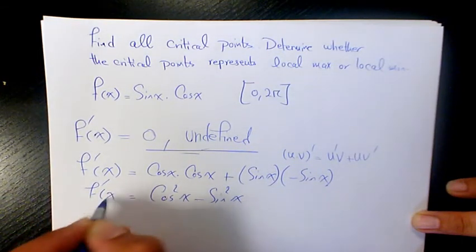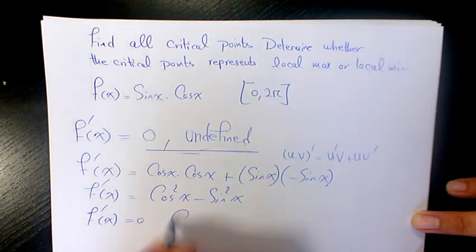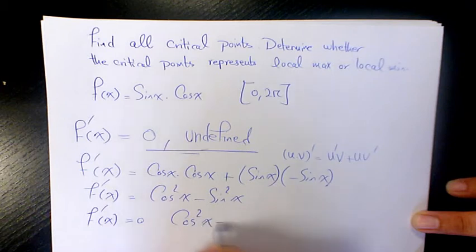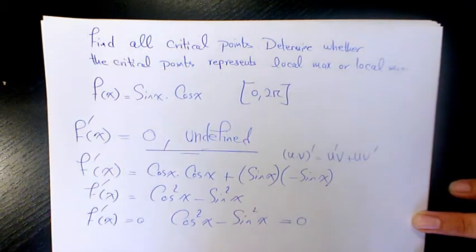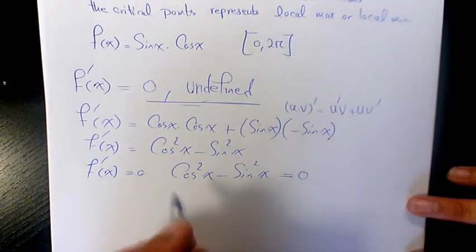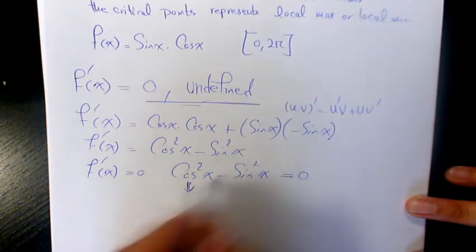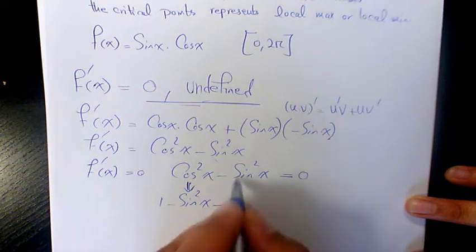Set f'(x) equal to zero: cos²(x) - sin²(x) = 0. Now we need to solve this. To find a better way, instead of cos²(x) I'm going to write 1 - sin²(x), using the Pythagorean identity. So we have 1 - sin²(x) - sin²(x) = 0.